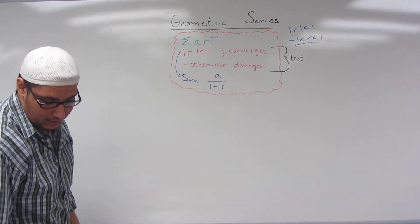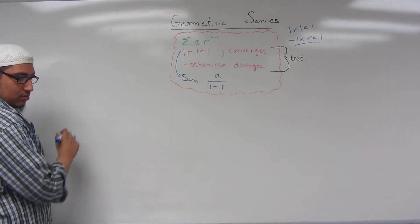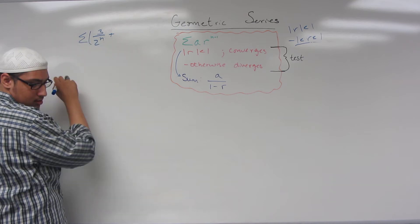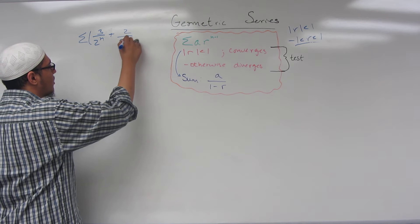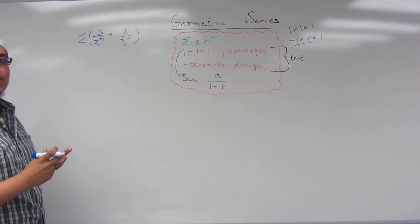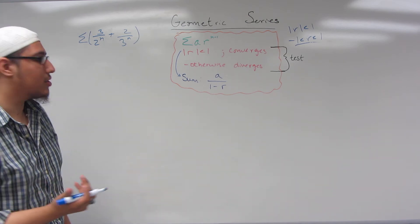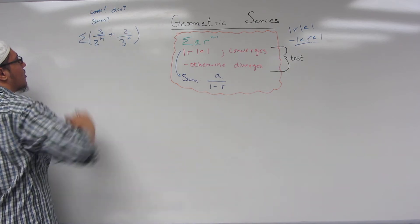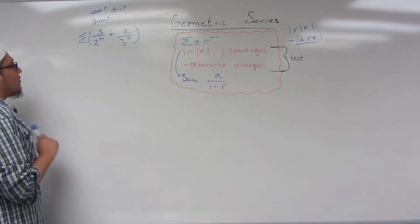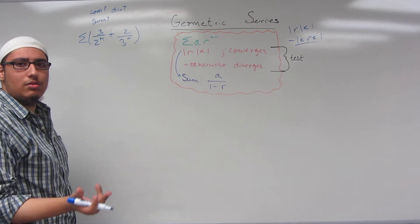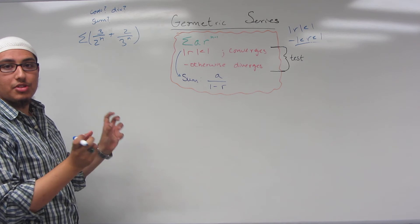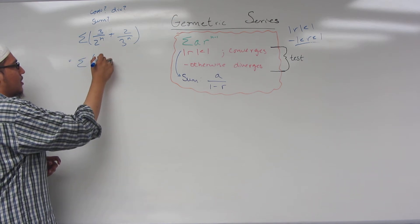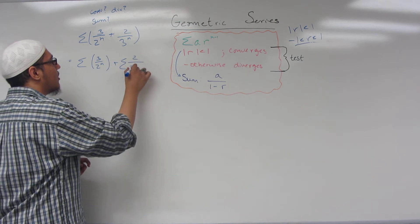Let's go over two more examples. Sigma of 3 over 2 to the n plus 2 over 3 to the n. Is this series convergent or divergent, and if convergent, find the sum. Using the rules of summation, if you have the summation of two separate terms, you can take their sums separately. Therefore this can be rewritten as sigma 3 over 2 to the n plus sigma 2 over 3 to the n.